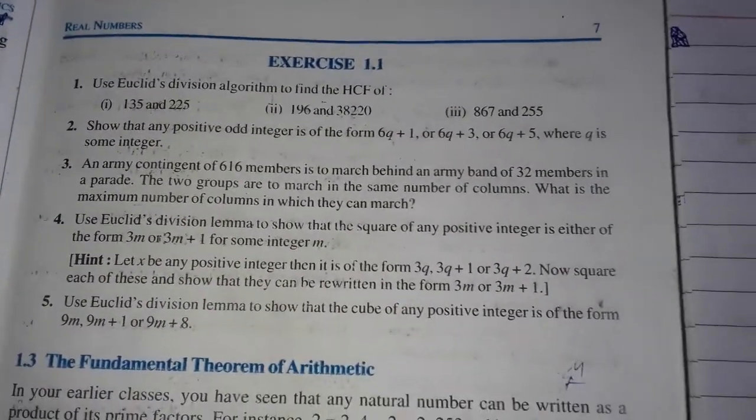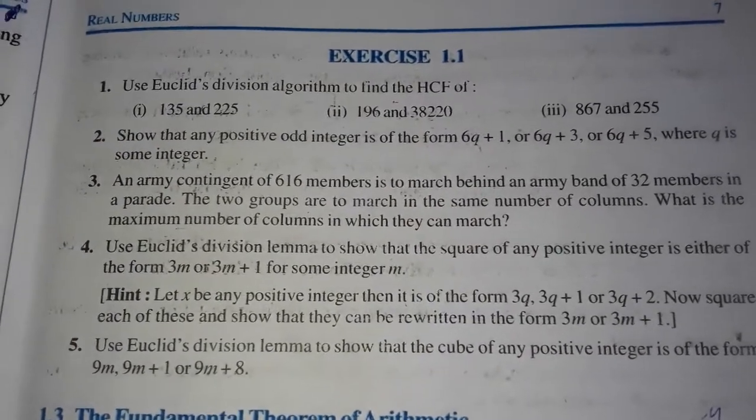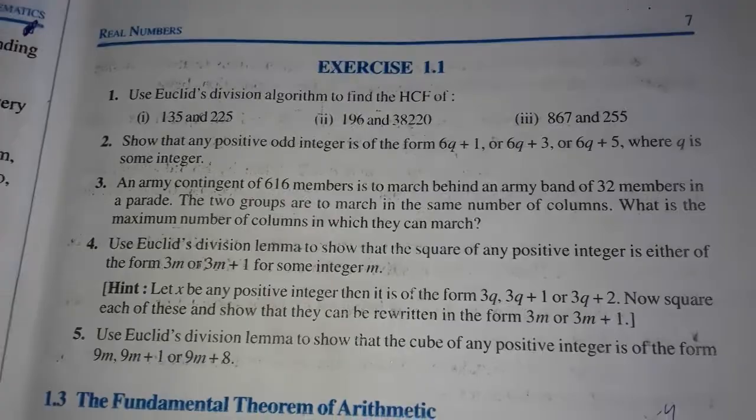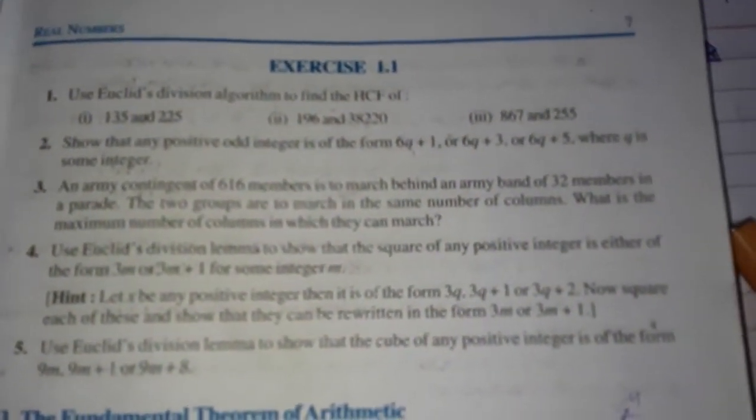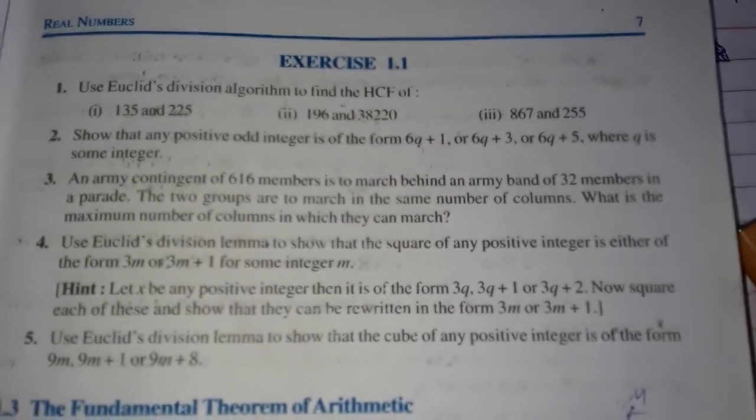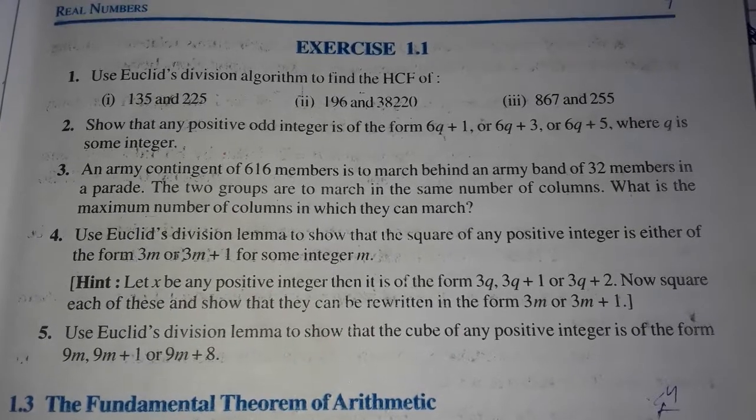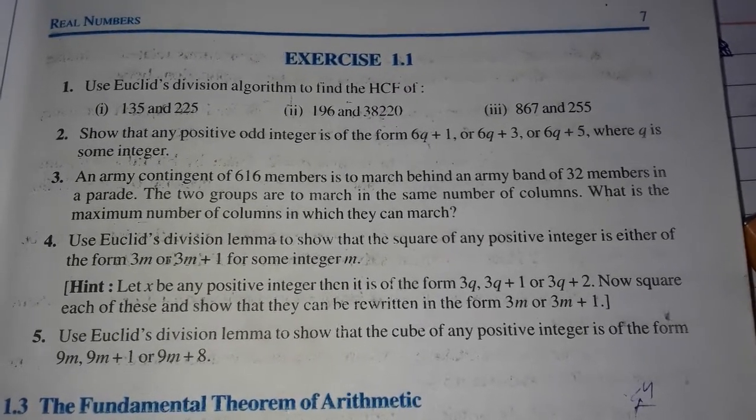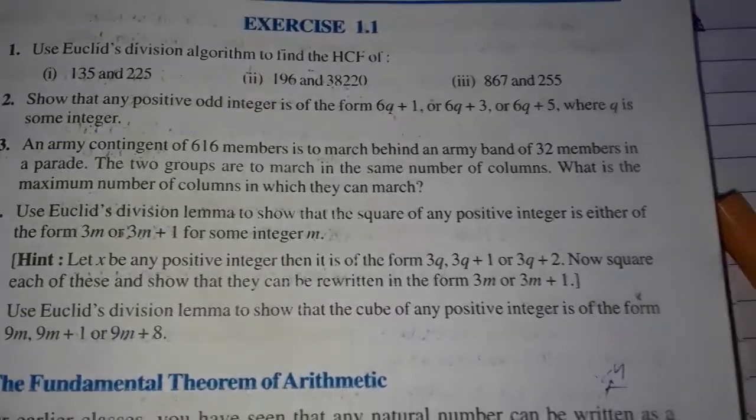In this question we solve this in very easy method and in an easy way to learn and understand this chapter. So let's start. The question is: use Euclid's division lemma to show that the square of any positive integer is either of the form 3m or 3m plus 1 for some integer m.